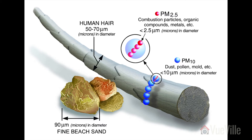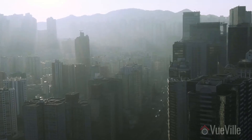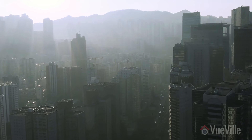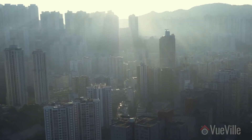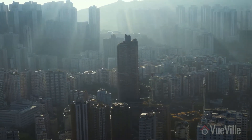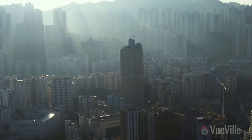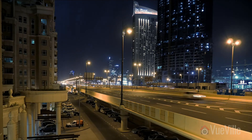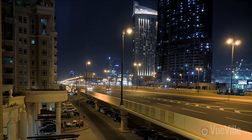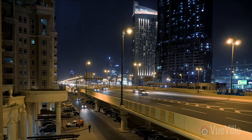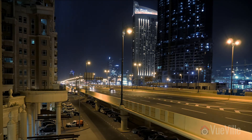The two kinds of particulate matter of most concern are PM10 and PM2.5, where the numbers refer to the size of the particles in micrometers. Exposure to small particles less than 10 micrometers in diameter poses the greatest problems, including heart attacks, asthma, decreased lung function, difficulty in breathing, and even premature death in people with heart or lung disease. Exposure to diesel exhaust including particulate matter can even cause cancer.